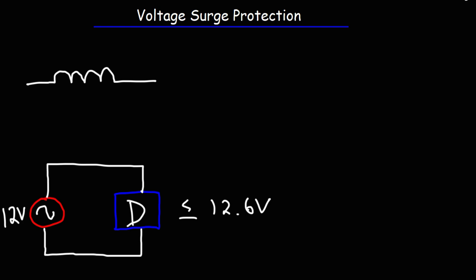Inductors are devices that can generate high voltages. Anything that contains coils of wire like transformers or even motors. Whenever there's a current flowing through an inductor, a magnetic field is present inside of that inductor. If you increase the current, the magnetic field will expand. It's going to get bigger. As the current is increasing, the inductor is absorbing energy from the circuit, thus causing the magnetic field to expand.